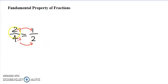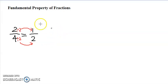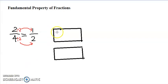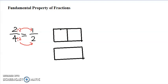We can draw a graph to explain this. We're going to draw boxes to describe the fractions. So we draw this rectangle to represent the number 1. For 1 half, we can divide 1 into 2 equal parts, and each piece will represent a half. So this will be 1 half.